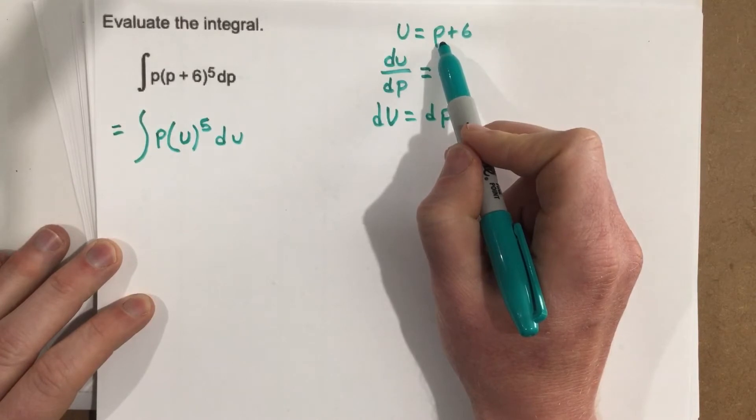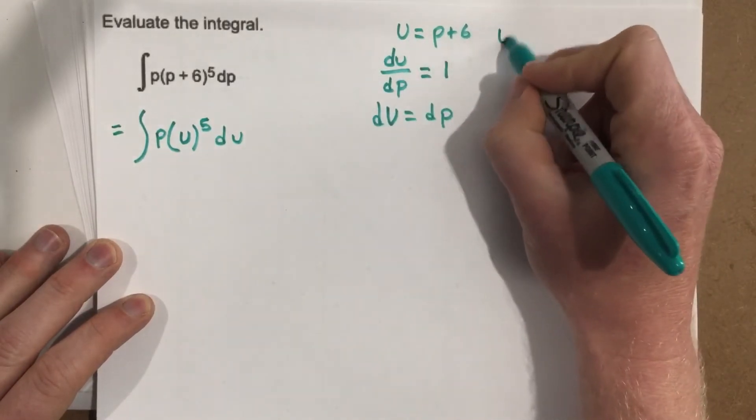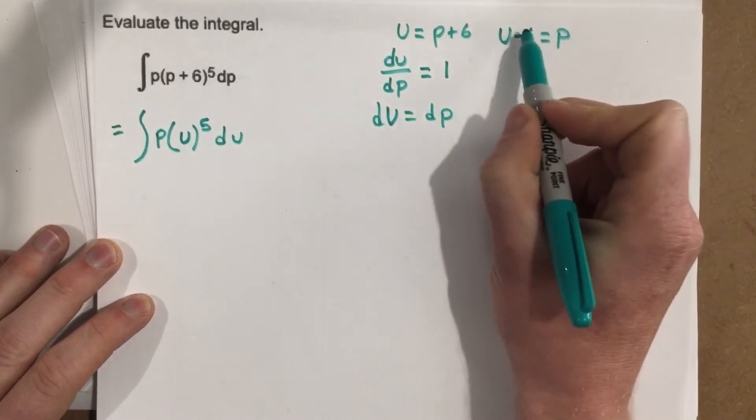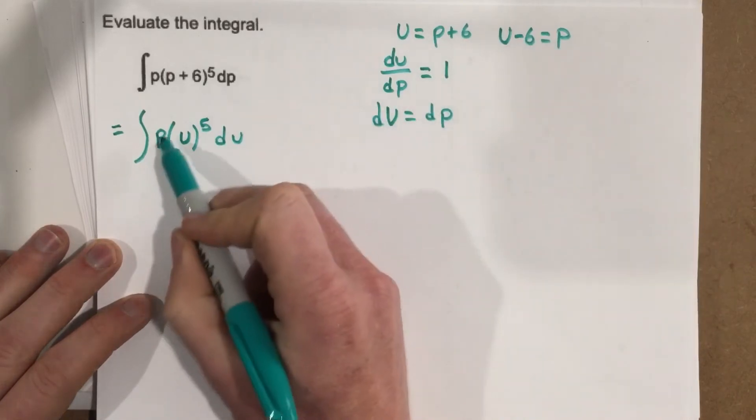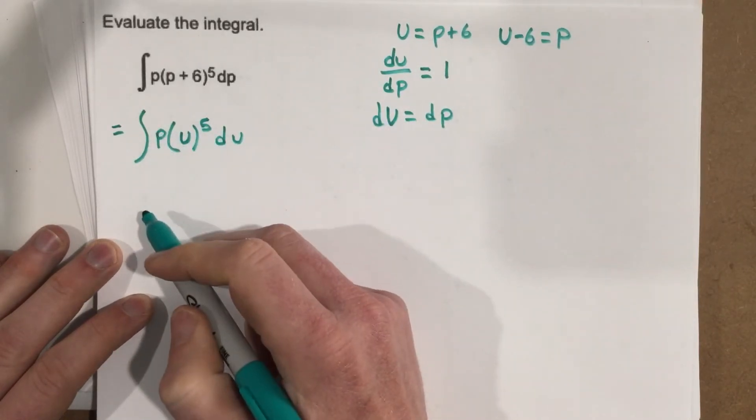We'll get p in terms of u. So let's subtract the 6 over, and that would be u minus 6 equals p. We can take u minus 6, plug it in for p in the equation, and now we have all of our terms in terms of u.